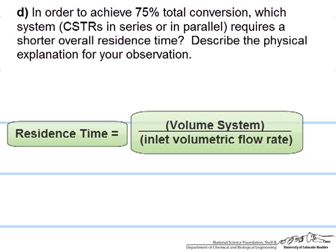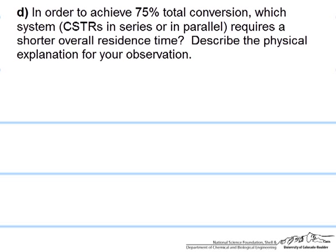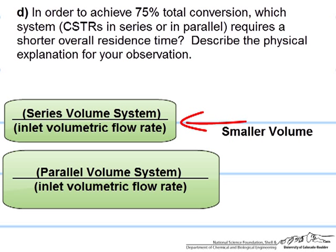It asks to first of all determine which one requires a shorter overall residence time. The residence time is the total volume of the system divided by the inlet volumetric flow rate. This is fixed for the two cases, but the volume varies. The volume is smaller for the case of the reactors in series, so the reactors in series have a lower residence time because they have a required lower total volume. It takes less time in the system to achieve 75% conversion.